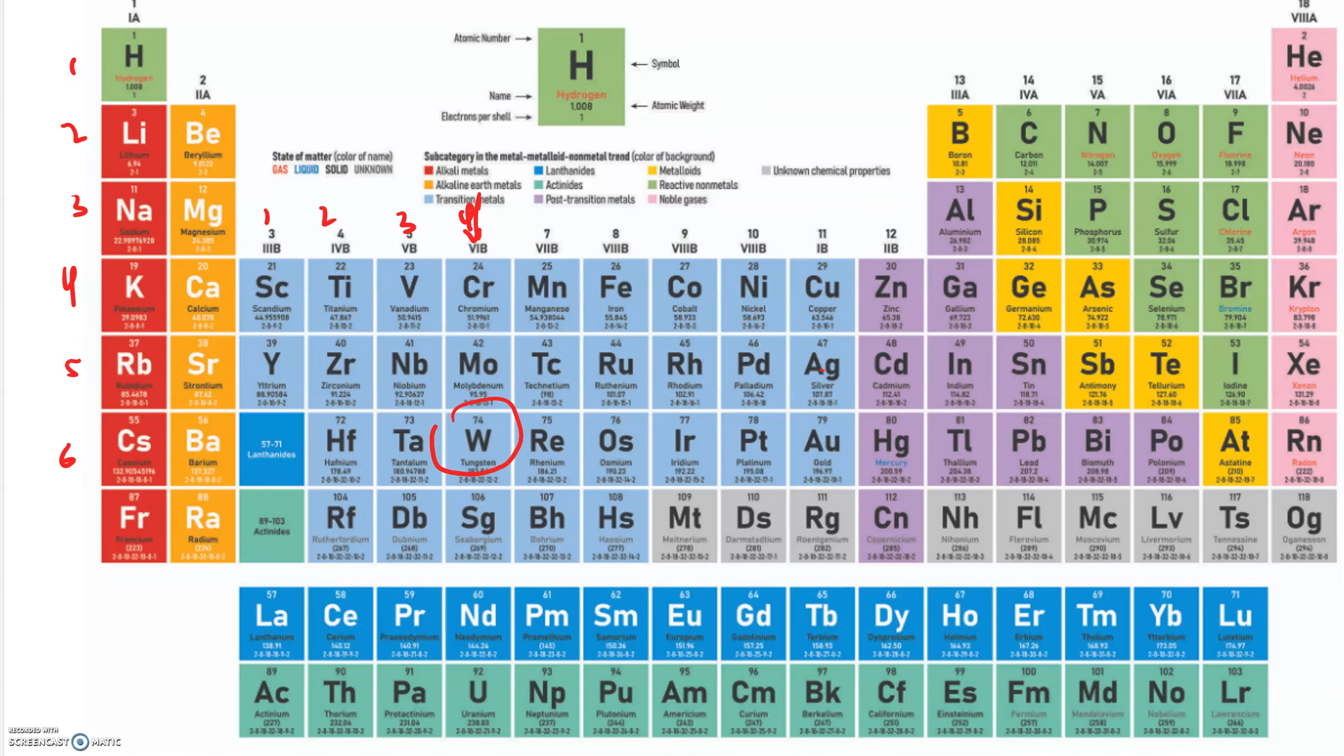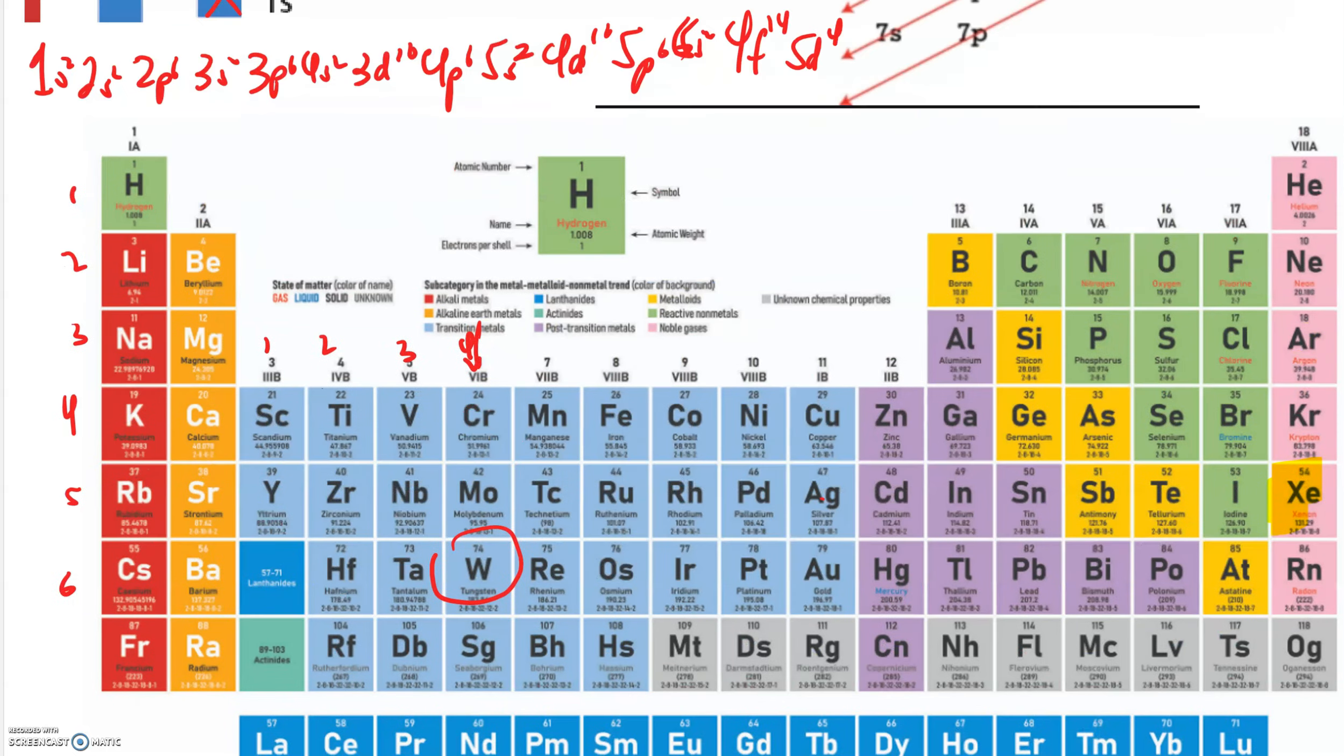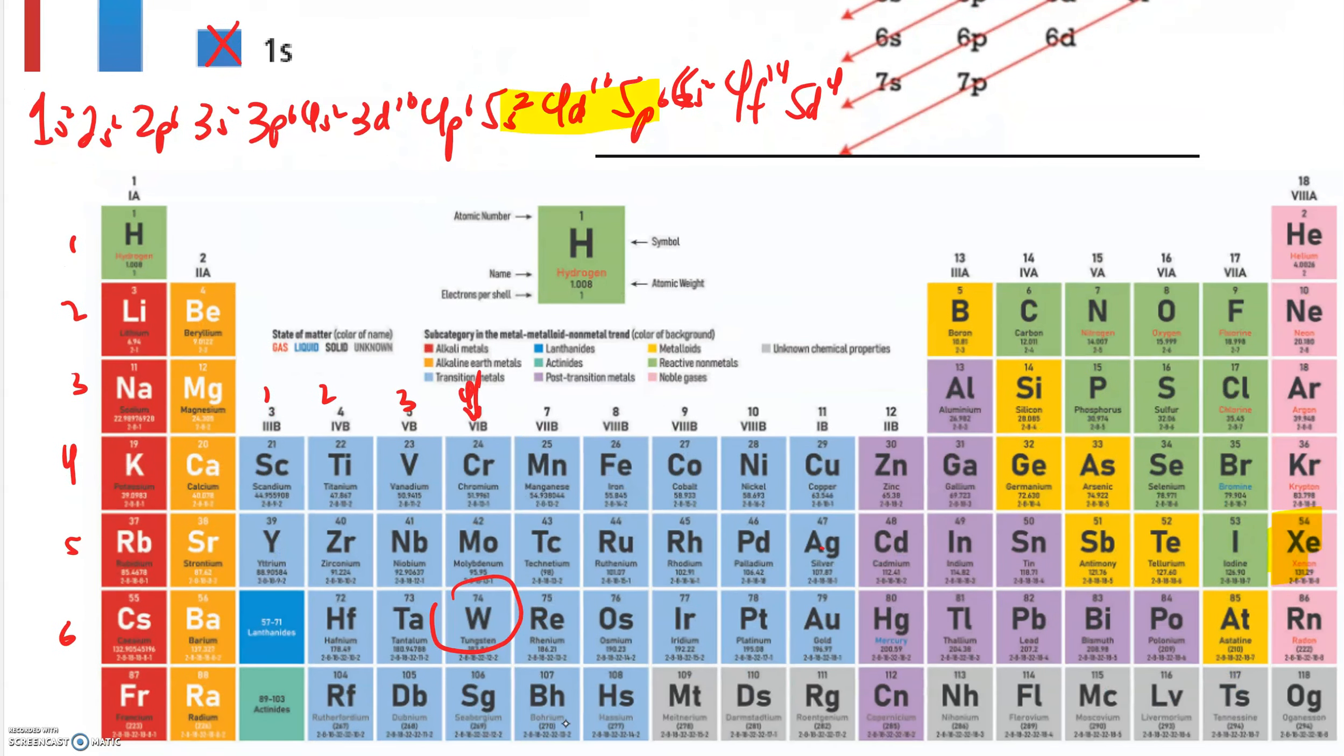And if you don't want to write all of that out because it takes too long, then feel free to use noble gas notation because the noble gas closest to tungsten without going over is xenon. You'll see that here because xenon ends 5p6. And everything that's over the top of that is unique to tungsten. Xenon, 6s2, 4f14, 5d4.